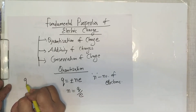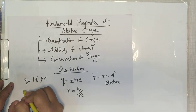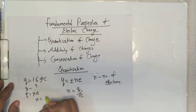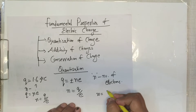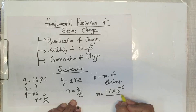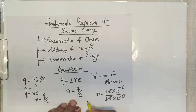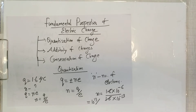For example, if q = 1.6 microcoulombs and we want to find n: n = q/e. Here q = 1.6 × 10⁻⁶ and the charge of an electron e = 1.6 × 10⁻¹⁹, so n = 10¹³. So q = ±ne is quantization of charge — we can express any big charge in this form.